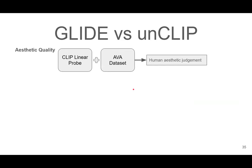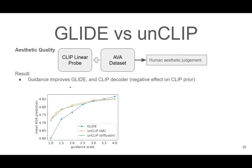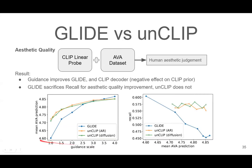They also tested aesthetic quality using a CLIP linear probe on the AVA dataset plus their generated images to produce an objective measurement of human aesthetic judgment. They found that guidance improves both models. However, when looking at recall: as the AVA prediction increases with guidance, GLIDE gets worse in recall, whereas unCLIP remains relatively stable. So GLIDE sacrifices recall for aesthetic quality improvement, whereas unCLIP doesn't sacrifice much.